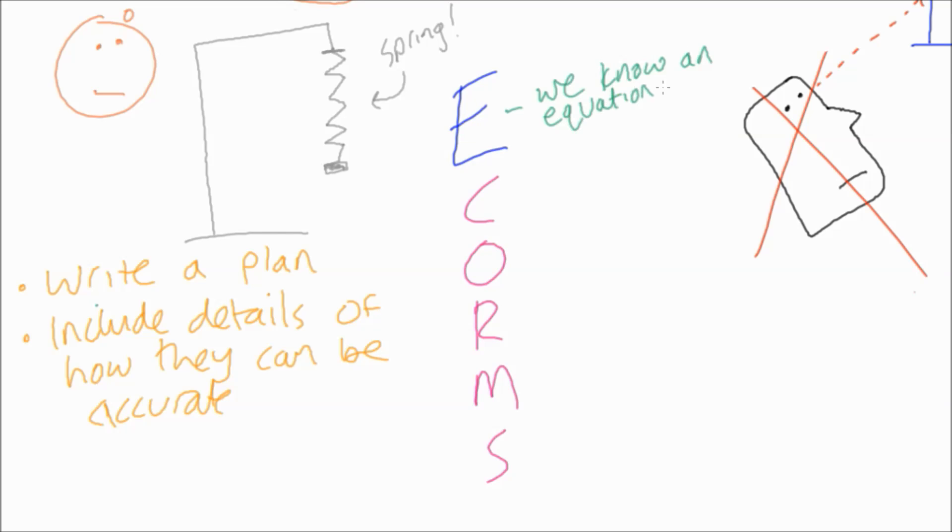So is there an equation we know? Well there is an equation for Hooke's law but we don't really need it in this case. What are we going to change? Well we're going to change the amount of load on the spring, so we're going to add a known mass each time. That's going to be our C of CORMS. What about other? Just have to make sure you don't stretch the spring too far, so that's maybe another we can think about.